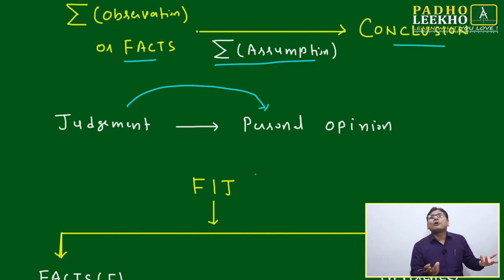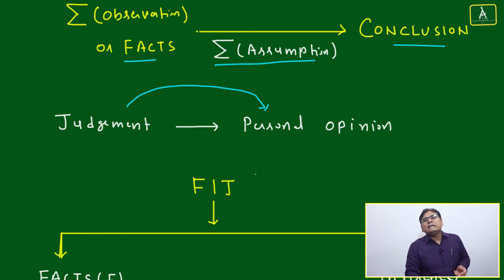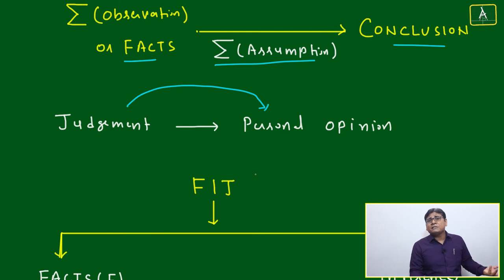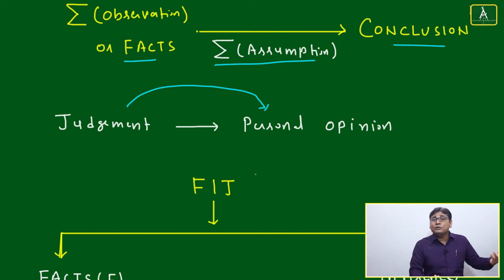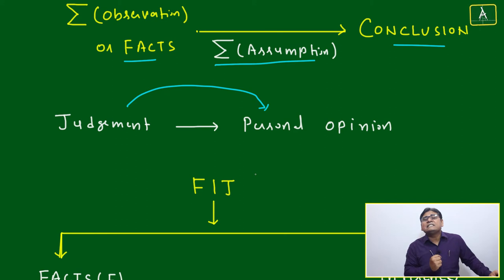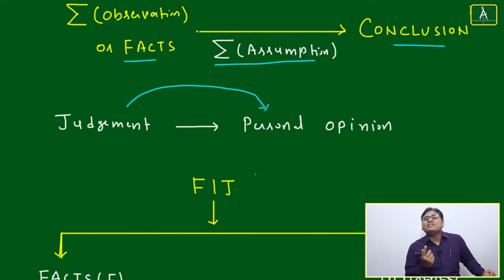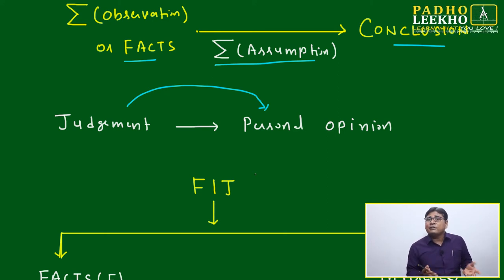Judgment is a personal opinion — whatever your opinion, it is 100% true for you but not necessarily correct for others or universally. That opinion is built based on your own observations and what you have learned. Everyone has certain limitations and a certain filter system — whatever we see, we are not always able to observe correctly.